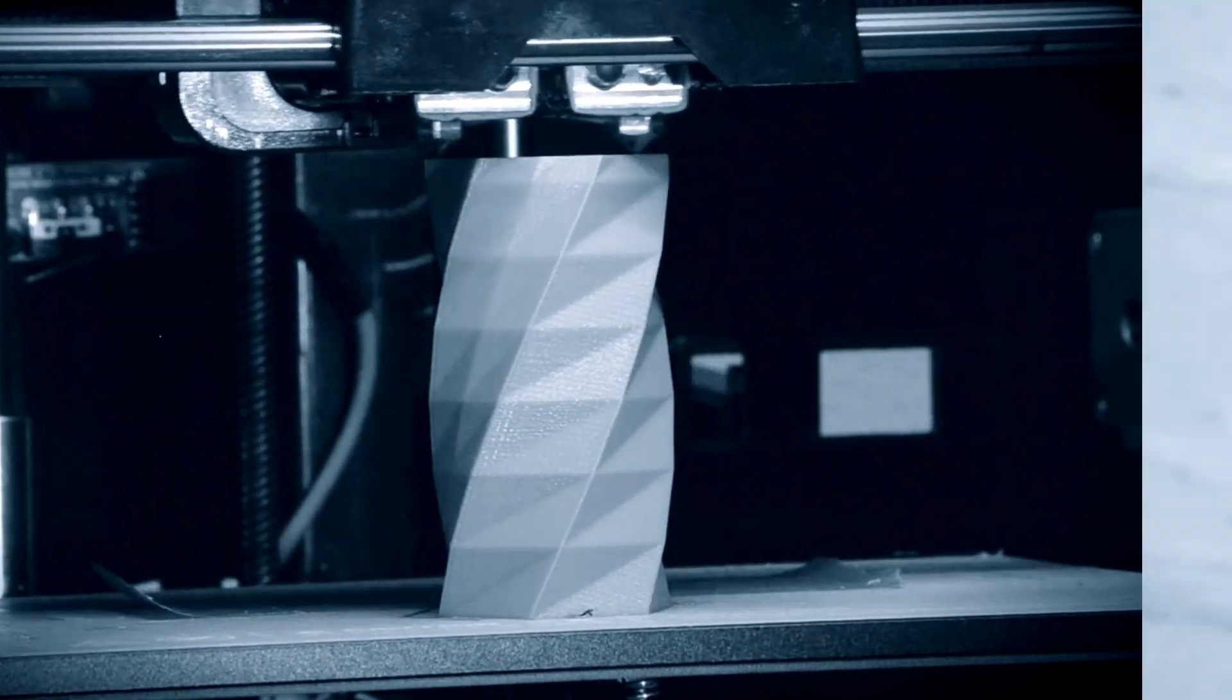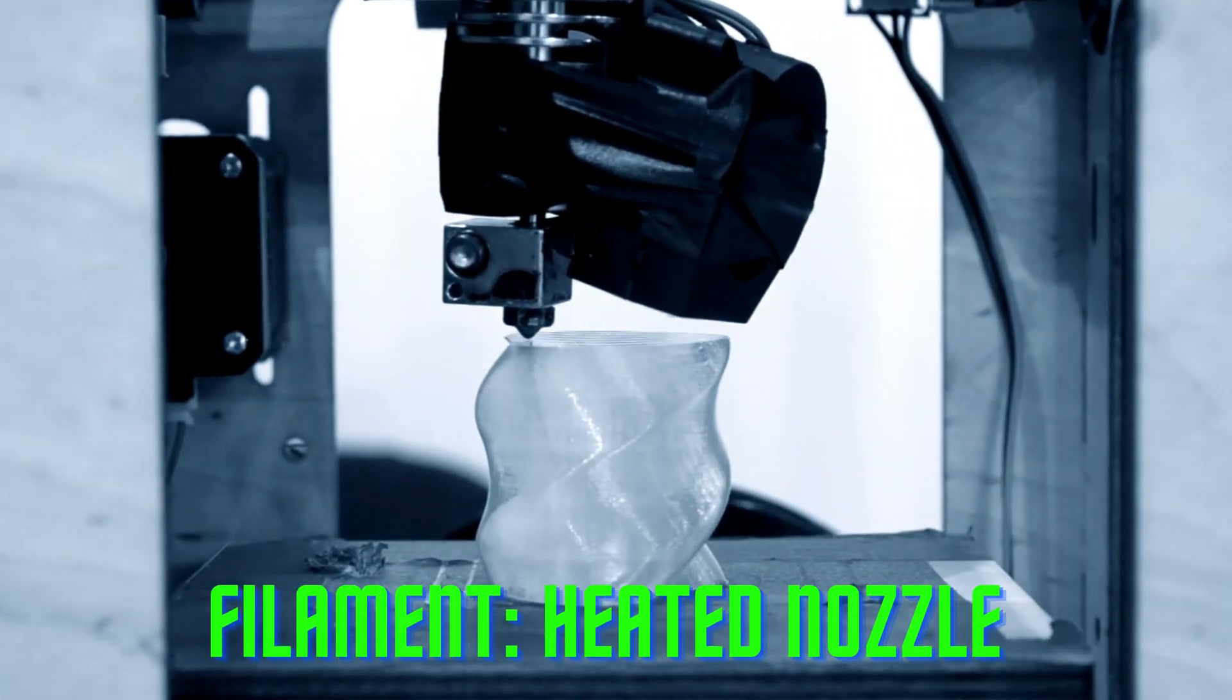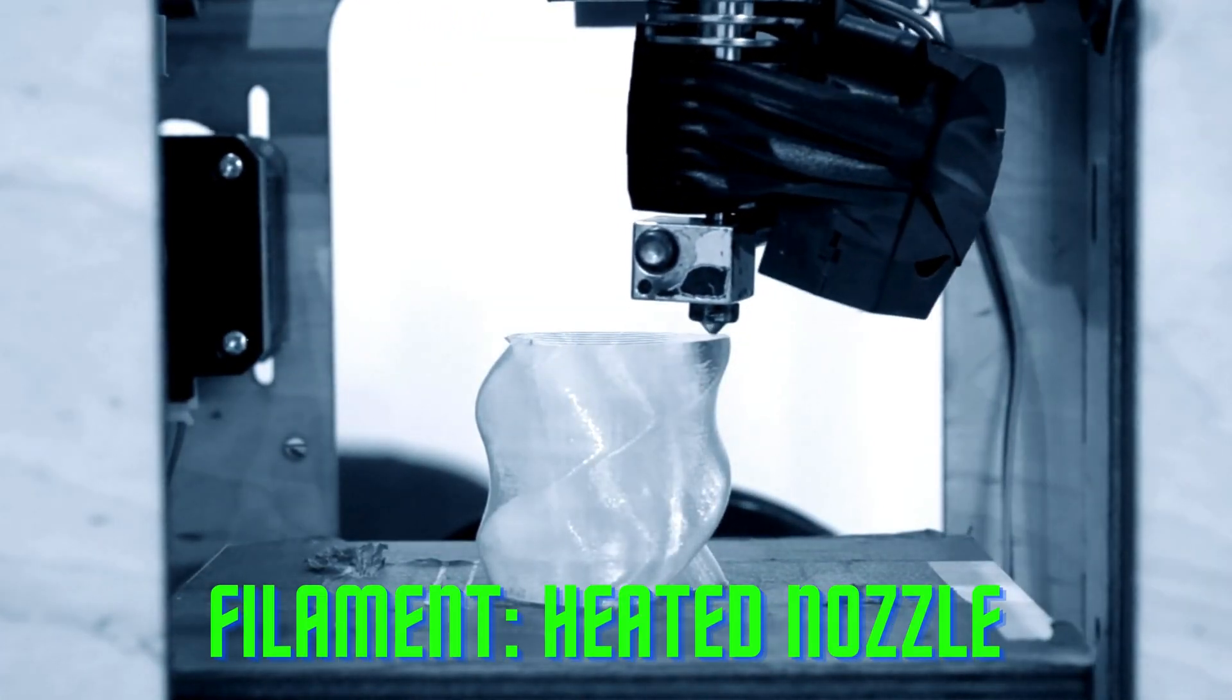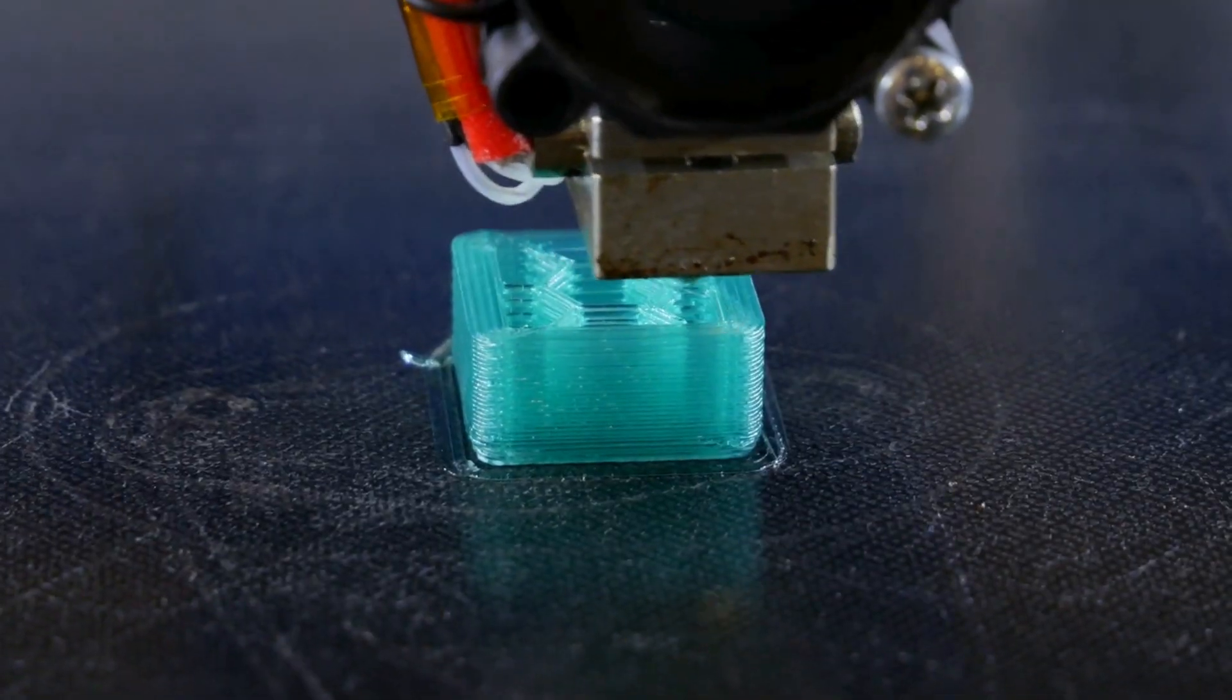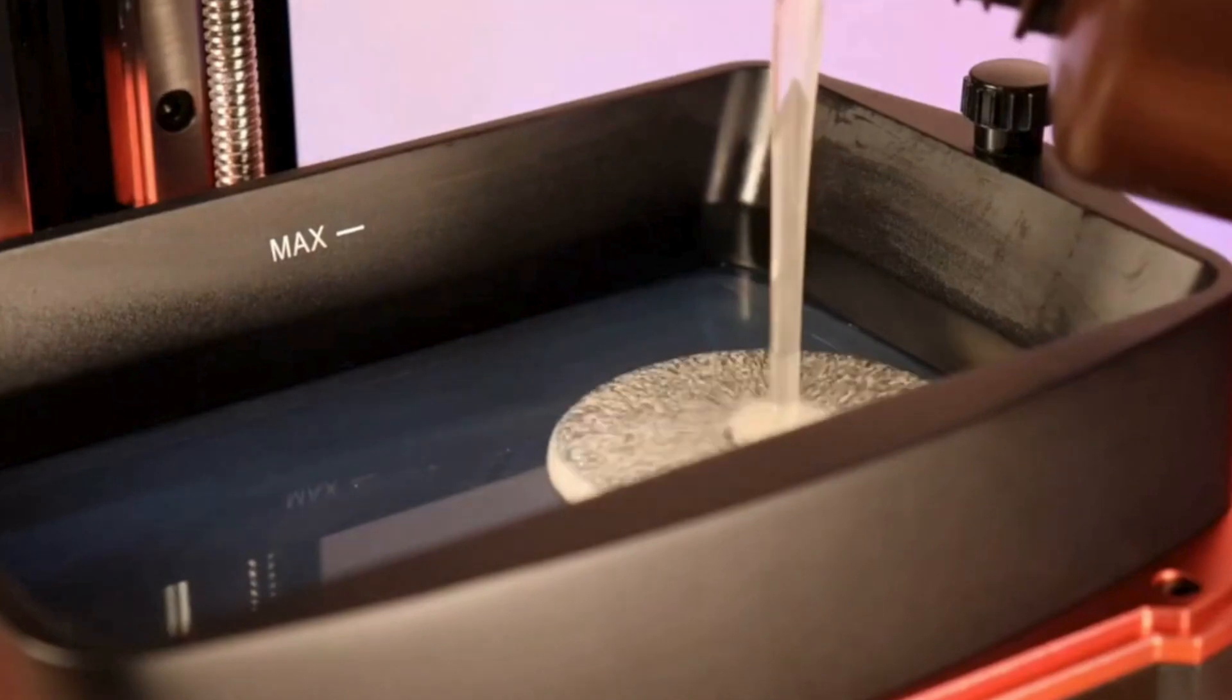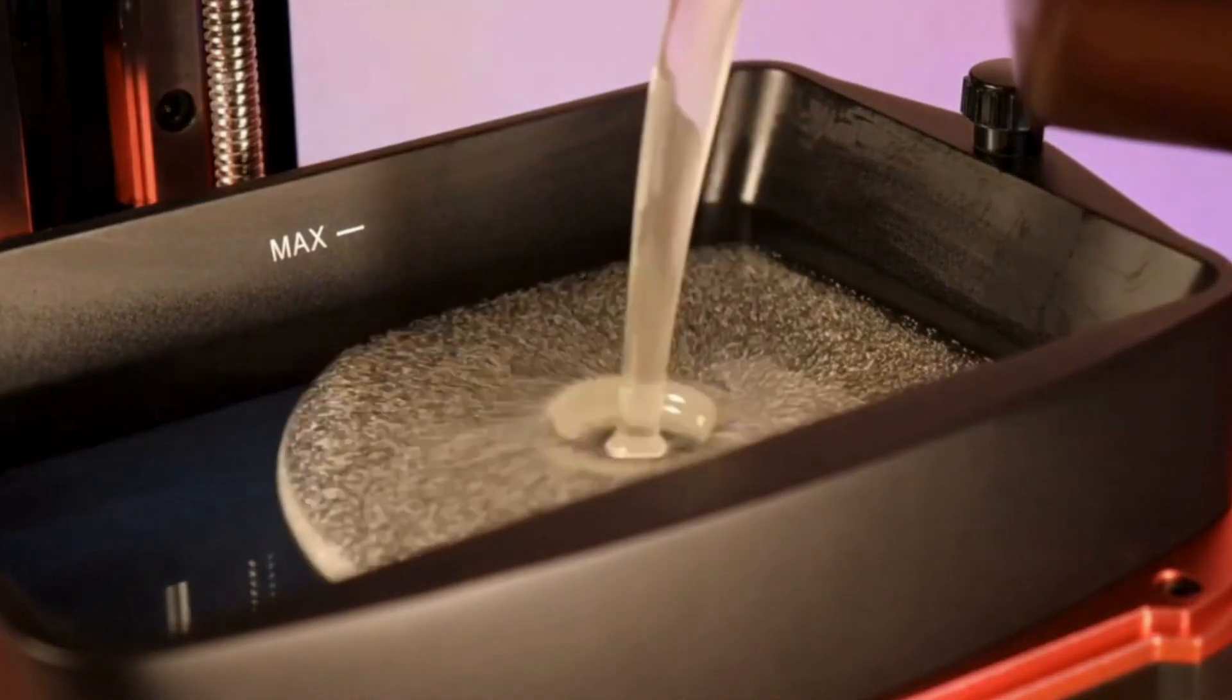Filament printers use a heated nozzle to melt and deposit the filament, which is a thin thread-like plastic, on a surface. Resin printers use a laser or UV light to solidify the resin, which is a liquid plastic, in a vat.